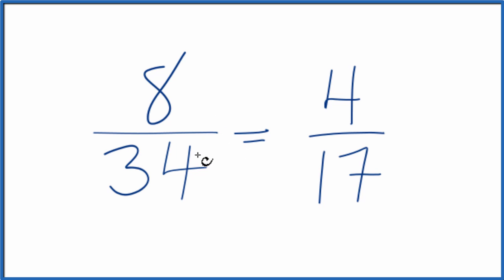So the fraction 8/34 can be reduced down to 4/17. This is simplest terms, and these are equivalent. If you on your calculator were to divide 8 by 34, or 4 by 17, you would get the same decimal answer. It's just that we've reduced 8/34 down to 4/17.